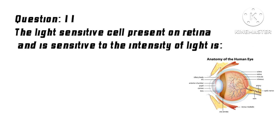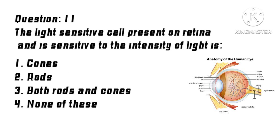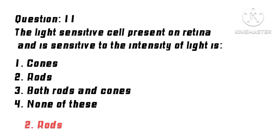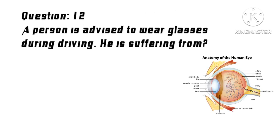Question 11: The light-sensitive cell present on the retina that is sensitive to the intensity of light is? Options: 1. Cones, 2. Rods, 3. Both rods and cones, 4. None of these. Correct answer: 2. Rods.